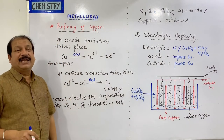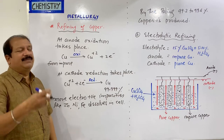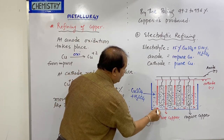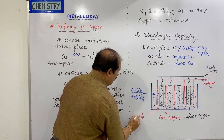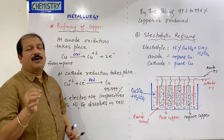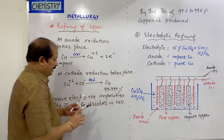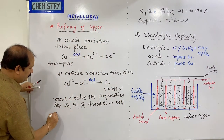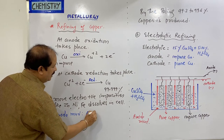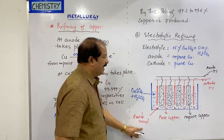Now gold, silver, and platinum are less electropositive impurities, so they do not dissolve. Instead, they settle down below the anode. This is called anode mud. The anode mud contains copper, silver, gold, and platinum.